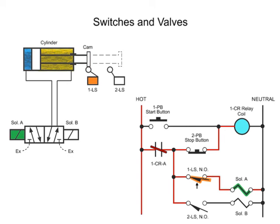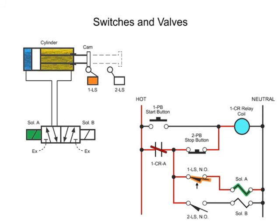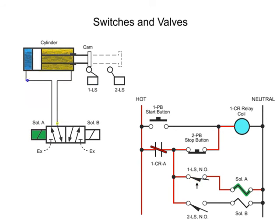Since limit switch 2LS is open prior to the beginning of the cycle, current cannot flow and thus solenoid B remains de-energized. Solenoid A operates the hydraulic valve, which shifts to allow fluid to flow and extend the cylinder. As the cylinder extends, the cam releases limit switch 1LS, which in turn de-energizes solenoid A.